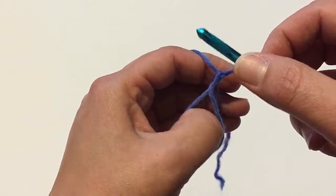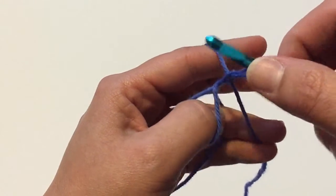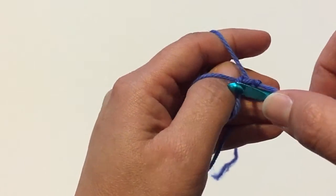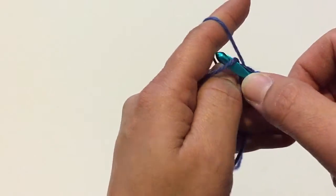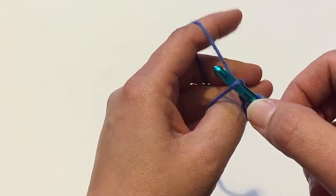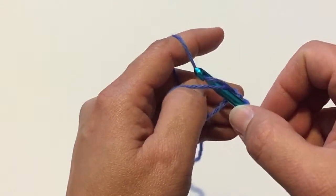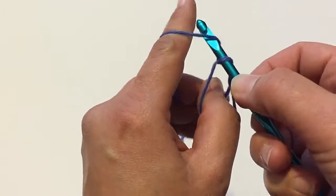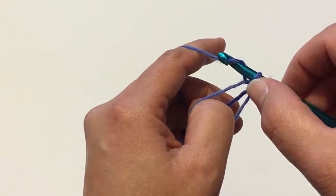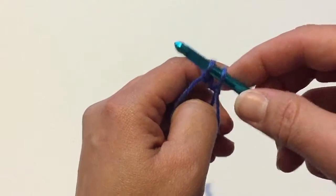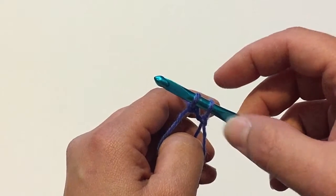So we're going to do that again. Make sure your end yarn you're just kind of holding out of the way. So we're going to go through the loop. Keep that on your thumb there. Through the loop, grab the yarn, pull it through. Then you're just going to wrap the yarn around the crochet hook and pull that through that loop. And now you have two stitches cast on.